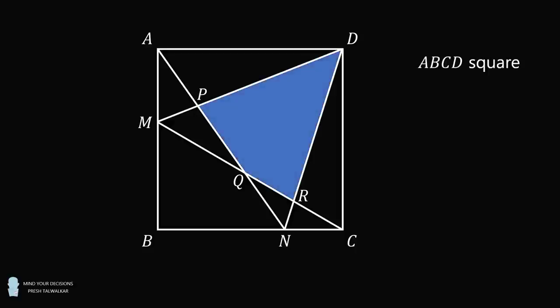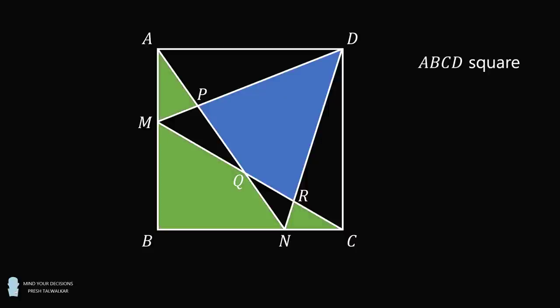Consider one region, PQRD, that's shaded in blue. Then consider three regions that are shaded in green. These are the sum of the areas of APM, MQNB, and NRC.